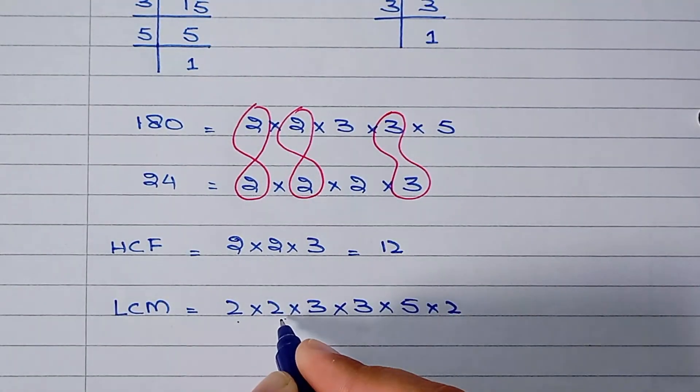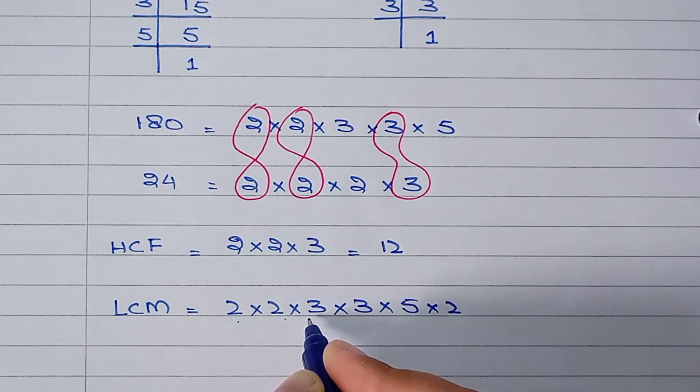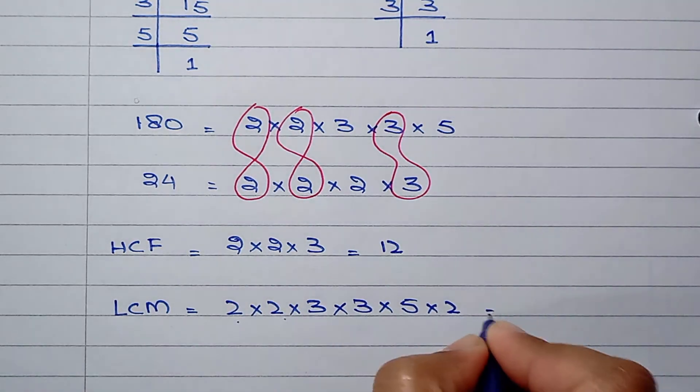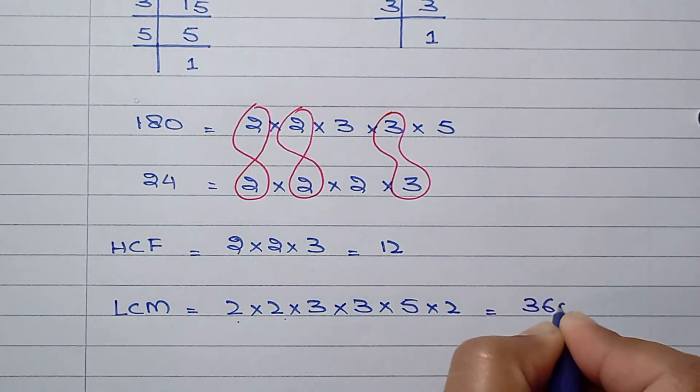Now 2 times 2 is 4, and 4 times 3 is 12, then 12 times 3 is 36, then 36 times 5 is 180, and 180 times 2 is 360. So the LCM of the two numbers is 360.